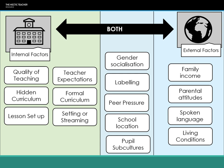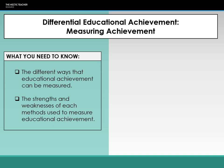More detail on each of these factors will be explored when we look at the individual social groups. We'll be covering ethnicity, gender, and social class in detail — examining what the trends are, the internal and external factors influencing them, and evaluating whether those trends are actually accurate.